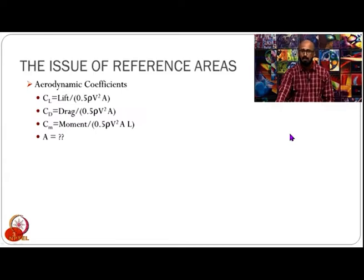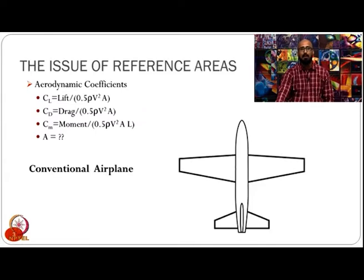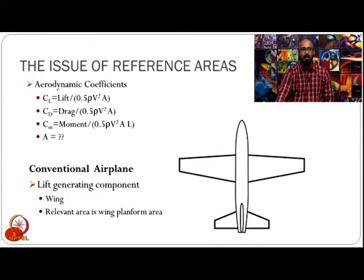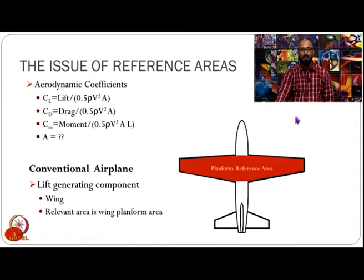Let us look at the issue of reference areas. In a conventional airplane, the lift-generating component is the wing, and therefore the relevant or reference area for aerodynamic coefficients would be the wing planform area. That is why we consider the planform area for a conventional airplane.